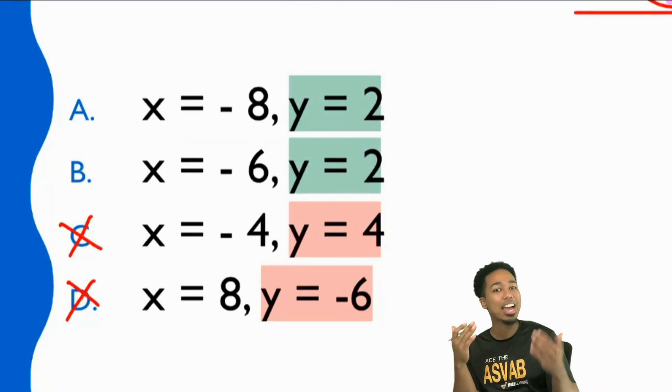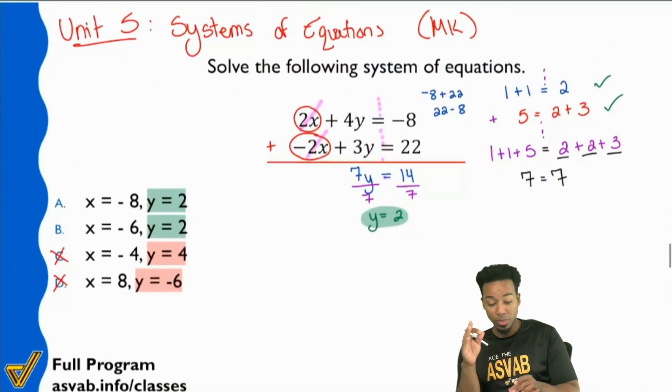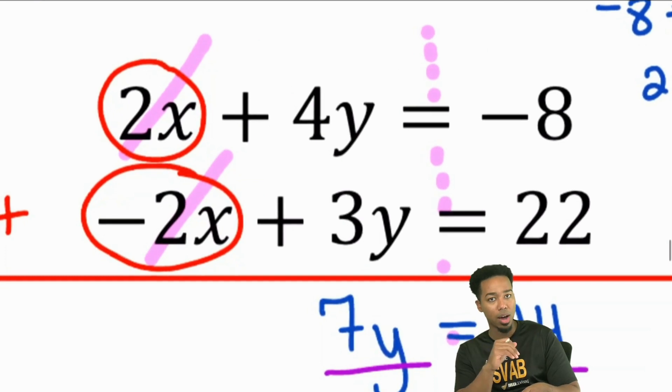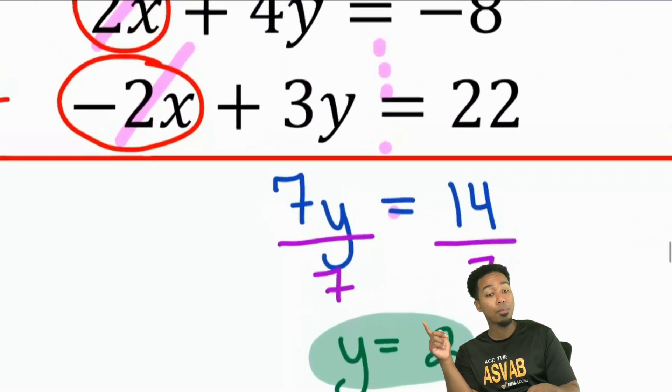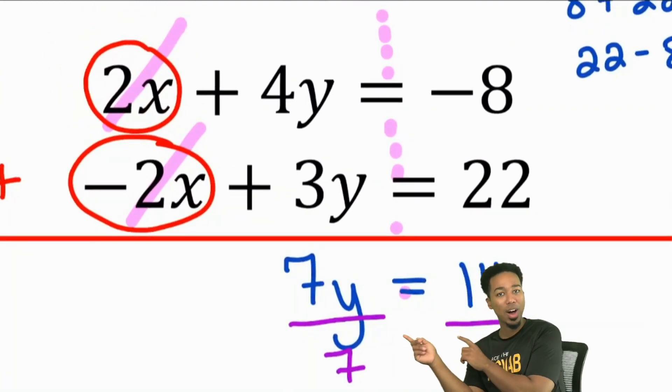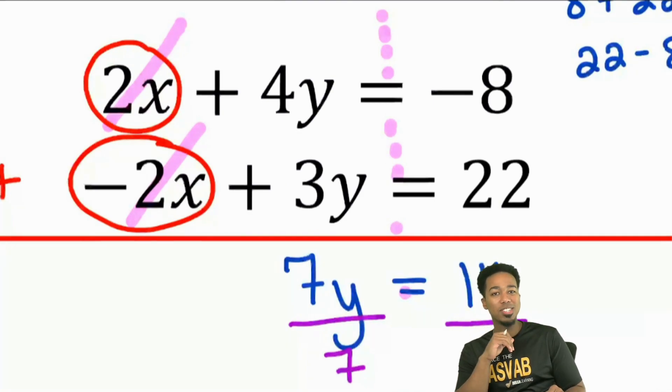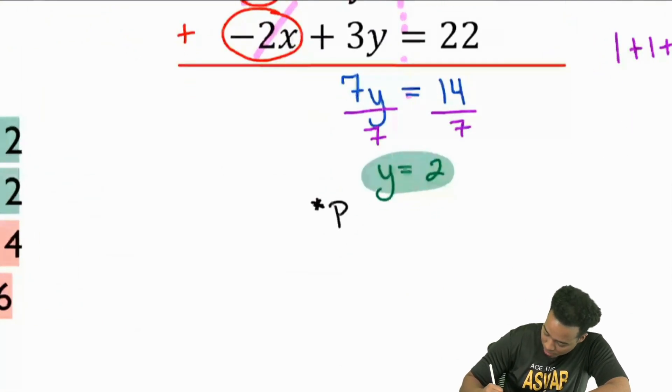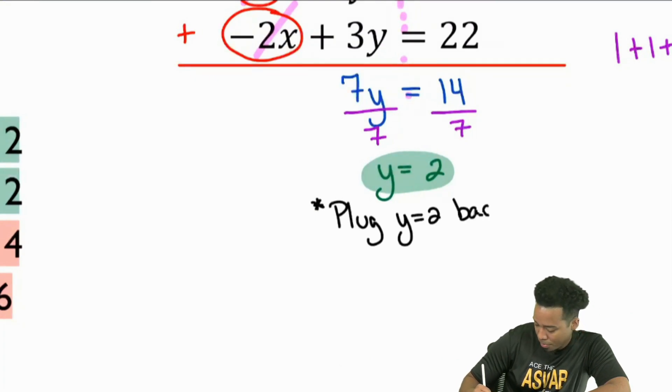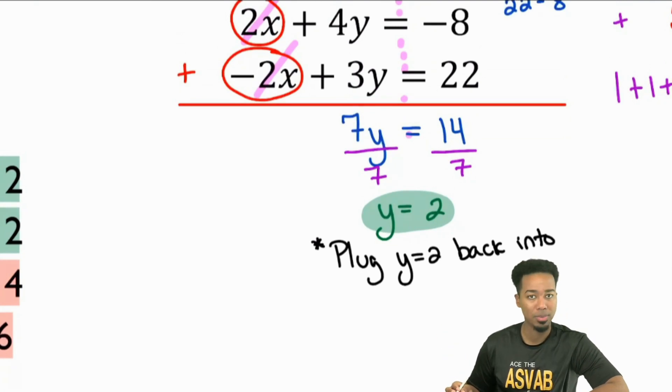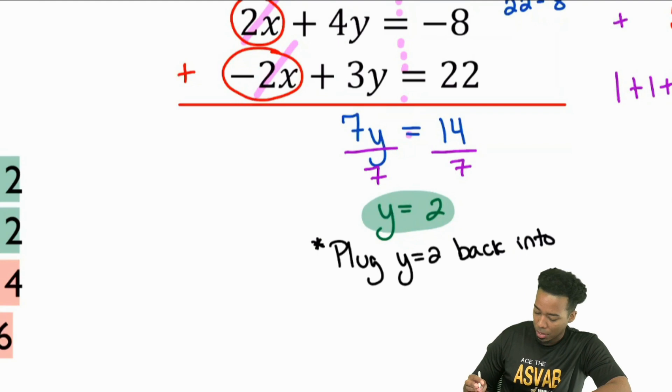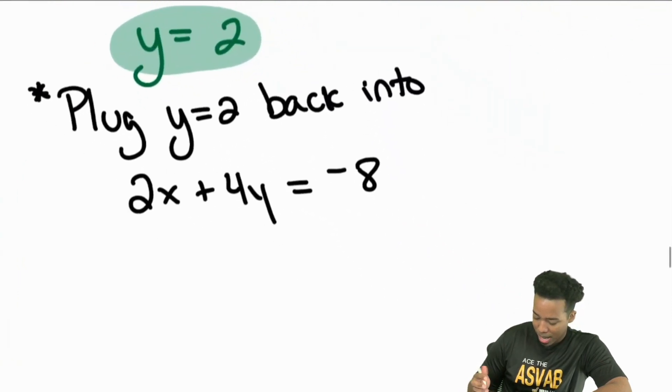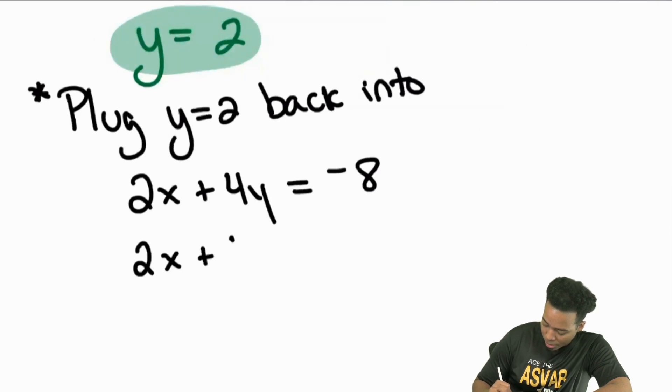Now to complete this, to figure out what X actually is, is a very straightforward process. Remember, these equations that we have right here use X and use Y. We just found out what Y is. So the power that we now have, my party people, is that we can take that Y equals 2 and plug it into any of these equations, and we'll be set. Watch this. I'm going to plug it back in. We are going to plug Y equals 2 back into, and we can pick any one of them. It doesn't matter. The first one or the second one, it doesn't matter. Just make a decision, and I'll do it in the first one. 2X plus 4Y equals negative 8. We can plug it back in and watch what happens. We have 2X plus 4 times 2 equals negative 8.